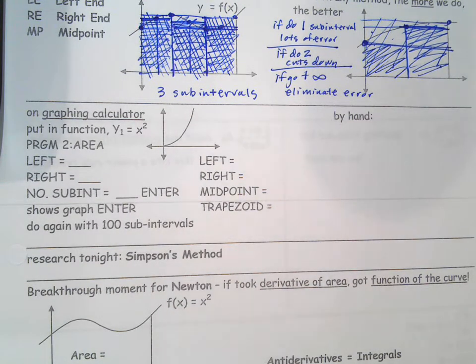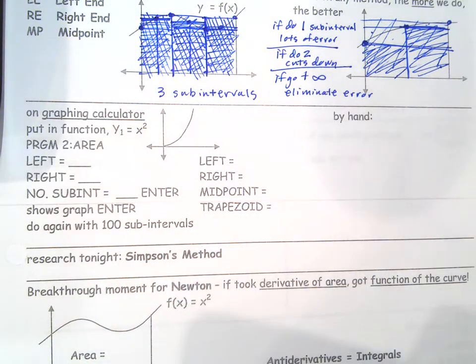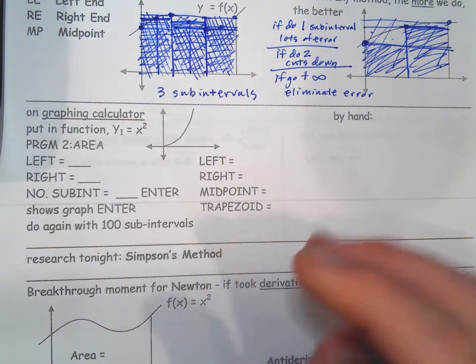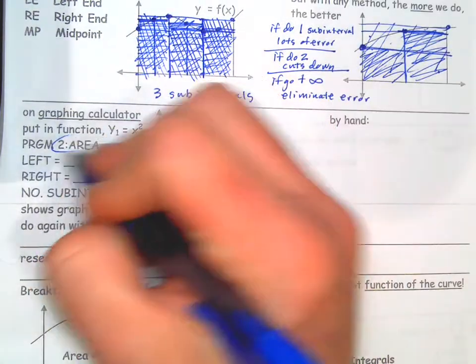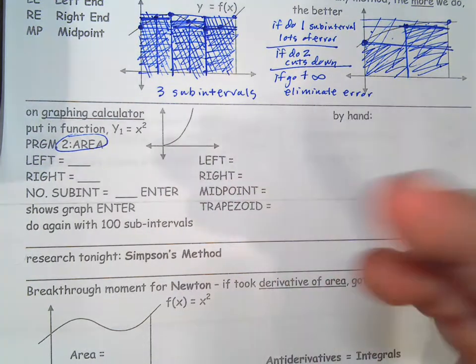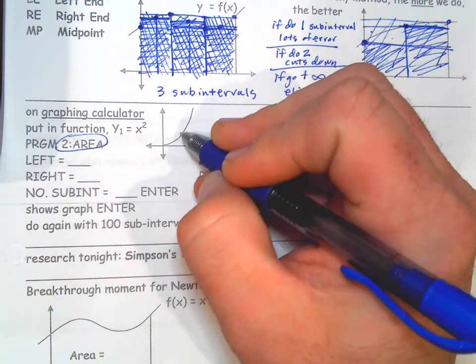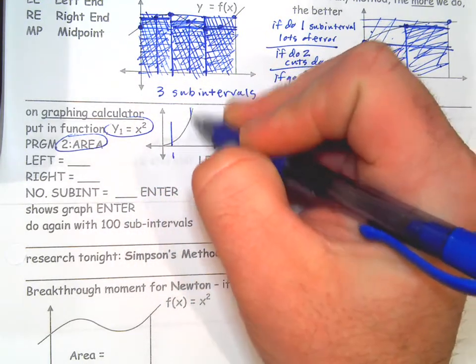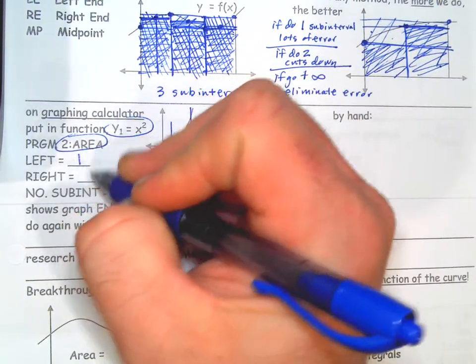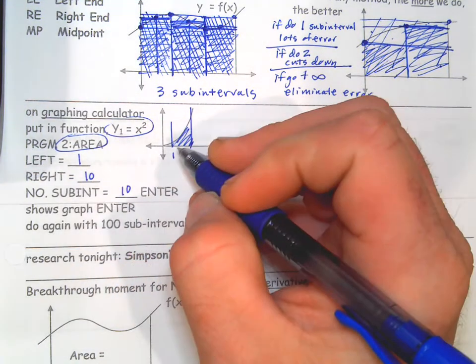Now let's see on the graphing calculator. I don't think I have this. Let me double check in my program menu. No, I don't have it. Anyways, there's this program that, I'm pretty sure you don't have it with me. But this program where it's called area. It doesn't come with the calculator. So it was programmed by a student or someone else. And you can share these programs. And it would ask you where you want to start the area. So let's say we're trying to find the area under a parabola. You'd enter the parabola into your Y equals menu. And then let's say we're trying to find the area from one to 10. So left would be one, right would be 10. And then you say, how many sub-intervals do you want? Let me do like 10. Press enter. And it graphs it.